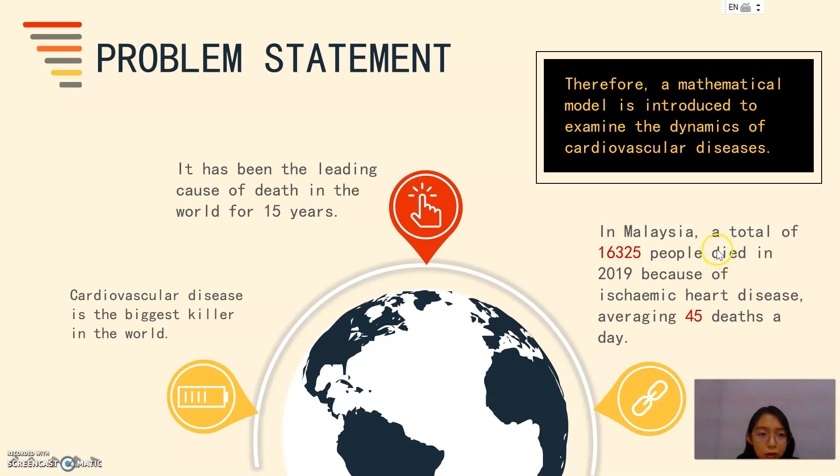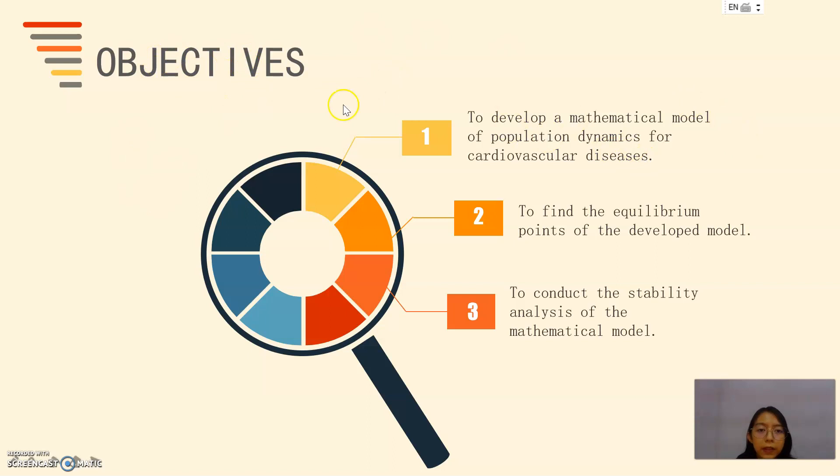In Malaysia, a total of 16,325 people died in 2019 because of ischemic heart disease. This means averaging 45 deaths in a day. Therefore, a mathematical model is introduced to examine the dynamics of cardiovascular disease.